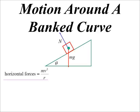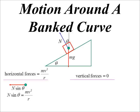Horizontally, we're moving in a circle, so the horizontal forces equal mv²/r. We need components of the normal force. Using geometry, theta ends up in that position, so horizontally that's the opposite side: N sin θ = mv²/r. Vertically, we're not moving up or down, so N cos θ going up equals mg going down: N cos θ = mg.